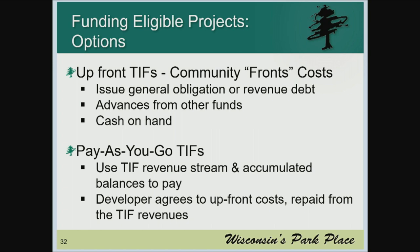Eligible project funding options include the upfront TIFF, where the city gives the developer funds upfront based on the project review, and that is repaid over the term of the TIFF agreement by the property taxes created. The other option, which council policies have pushed staff toward more recently, is pay-as-you-go. We look at the project finances and assessed value growth, then create a pay-as-you-go option where, as property taxes increase, the developer gets a portion back over the term of the TIFF — typically 10 or 15 years.